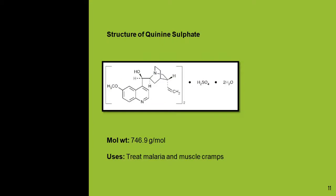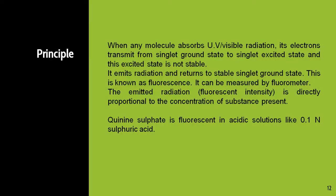Here you can see the structure of quinine sulfate. As you can see, it is a highly aromatic compound with a molecular weight of 746.9 grams per mole. It is the well-known anti-malarial drug — basically the first drug invented to treat malaria. Its uses are to treat malaria and muscle cramps.